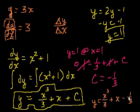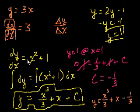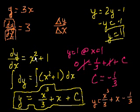Using these conditions — a point where this function crosses through — we can give the particular solution to this differential equation: y is equal to x to the third over 3 plus x minus 1 third. We just solved for c. If you don't believe me, take this expression and substitute it back, and you'll see that if you take the derivative of y with respect to x, it equals x squared plus 1.